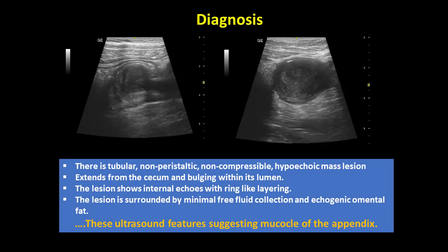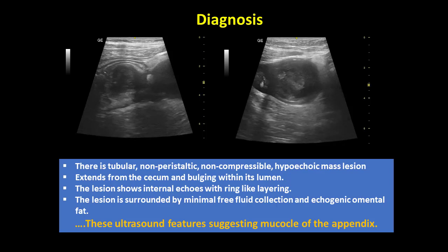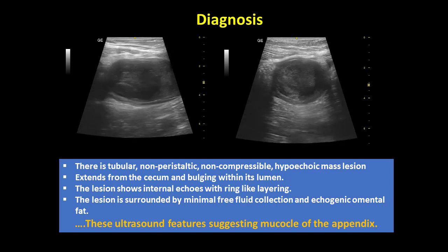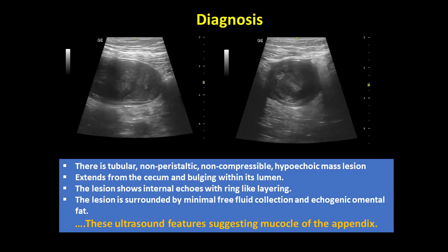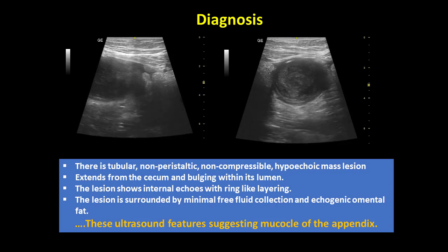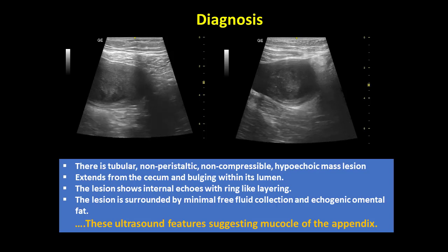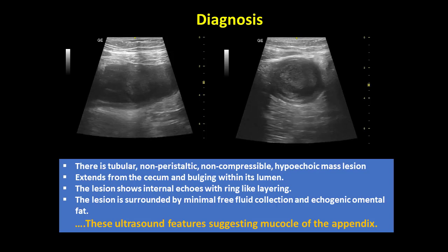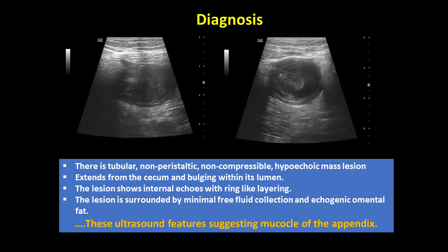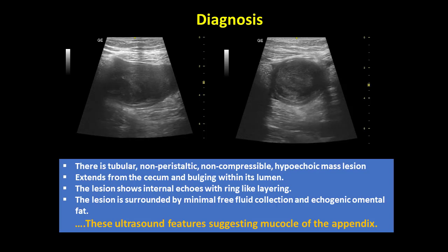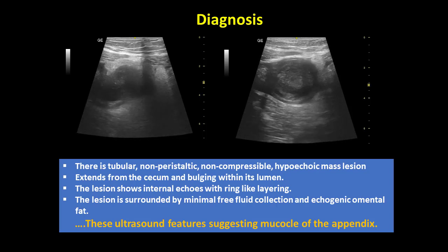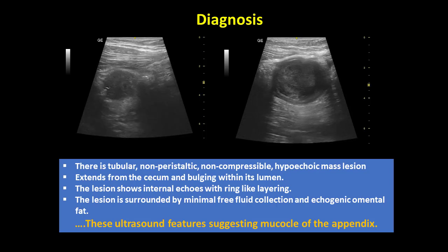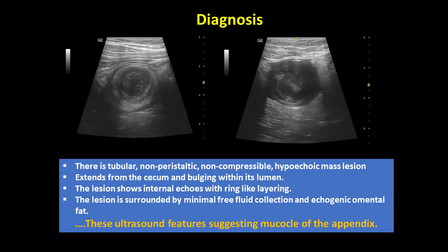As you can see, there is a tubular, blind-ended, non-peristaltic, non-compressible hypoechoic mass lesion. It extends from the cecum and bulges within the cecal lumen. The lesion shows internal echoes with layering and is surrounded by minimal free fluid collection and echogenic omental fat. Color Doppler examination revealed no internal vascularity.